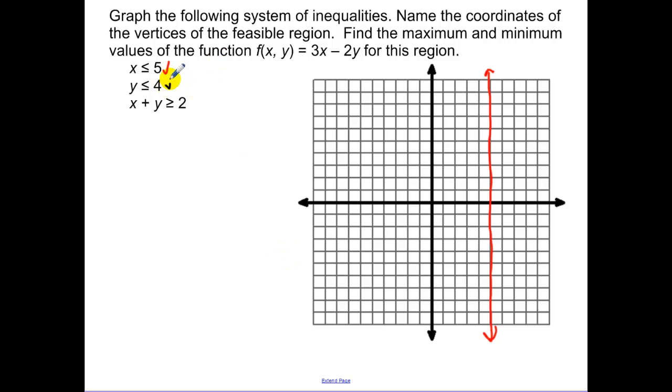Then we have y is less than or equal to 4. And then we have our last one. Then let's solve this for y. And we have a negative sloping line. So we plot our points. And then we draw in our line.